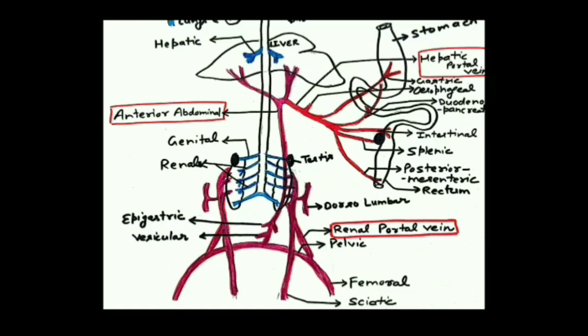The hepatic portal vein collects blood from various parts of the alimentary canal: from the stomach by the gastric vein, from the esophagus by the esophageal vein, from the duodenum and pancreas by the duodeno-pancreatic vein, from the ileum by the intestinal branch, from the spleen by the splenic branch, and from the rectum by the posterior mesenteric branch. This blood is deoxygenated but rich in nutrients like glucose and amino acids. Before entering the liver, the hepatic portal vein also receives the anterior abdominal vein.